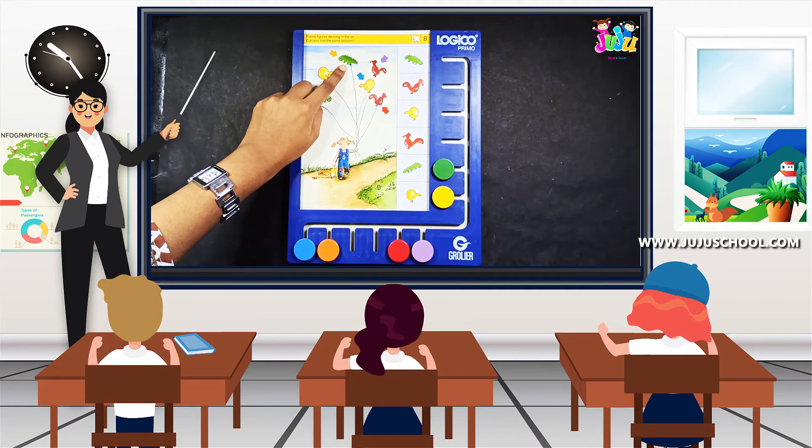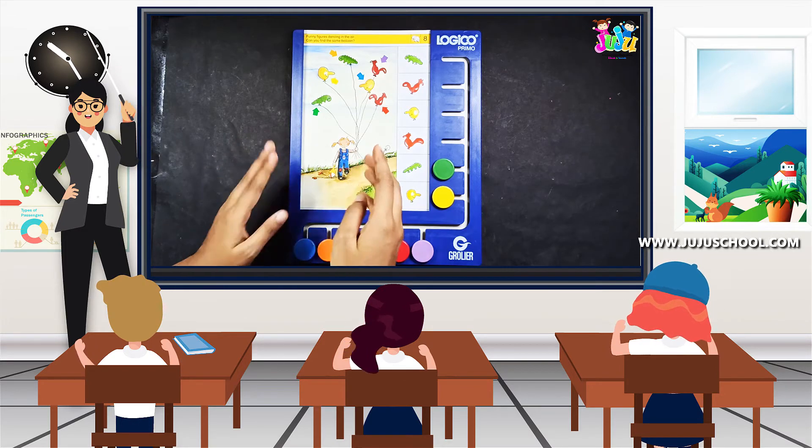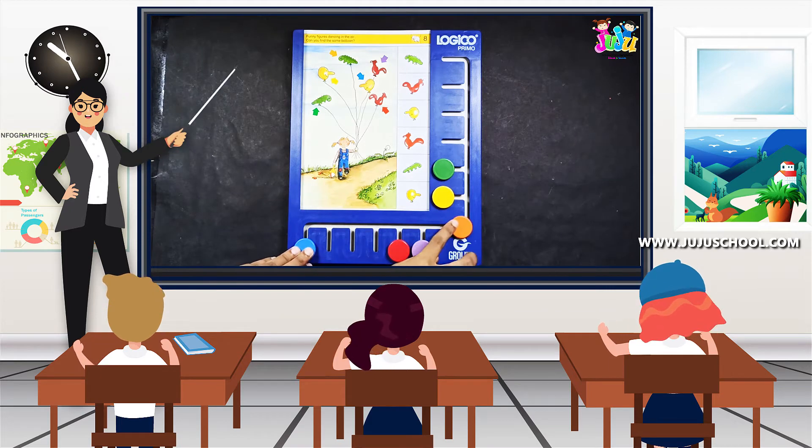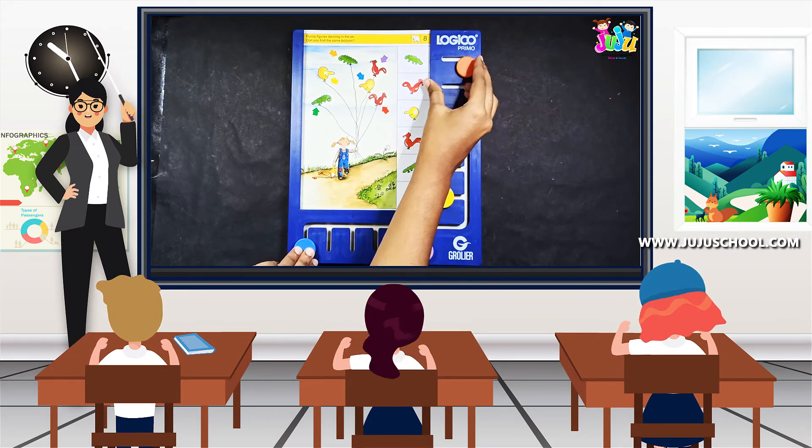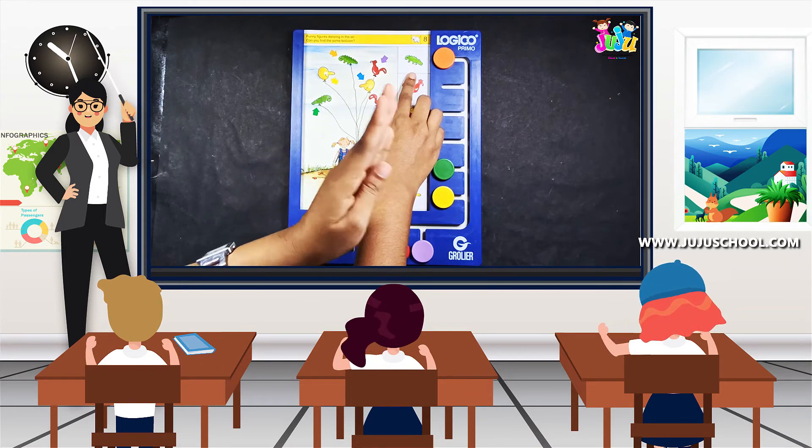Next, it's again an alligator shape with an orange mark. That is turning toward the left side. We have to move the orange button and take it to the alligator turning left.